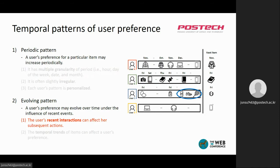Next, there are two kinds of evolving patterns that affect the user's next actions. The first one is the user's recent interactions, which implies the user's current interest. For example, the recommender system may recommend a tennis ball to user C because she bought some related items recently.